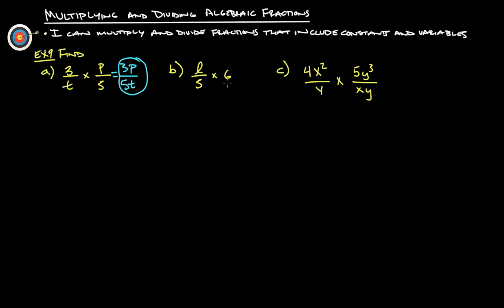L over 5 times 6. If you don't have a fraction here but no fraction there, simple way to solve that is to just put your whole number here and put it over 1 and then multiply straight across. So we got L times 6 which would give us 6L over 5 times 1 over 5. So you get 6L over 5.